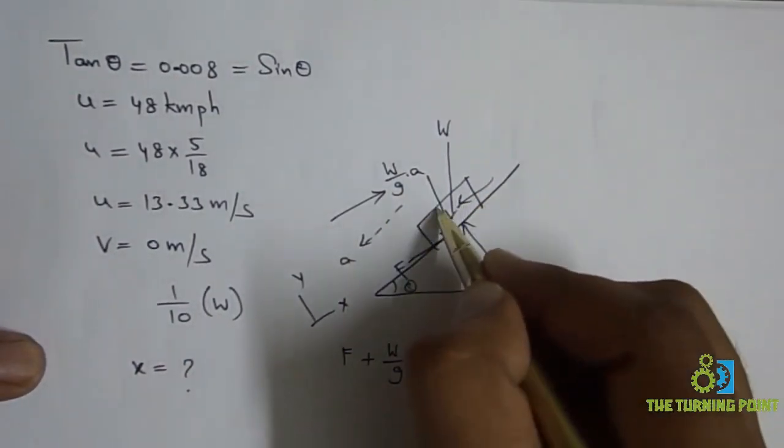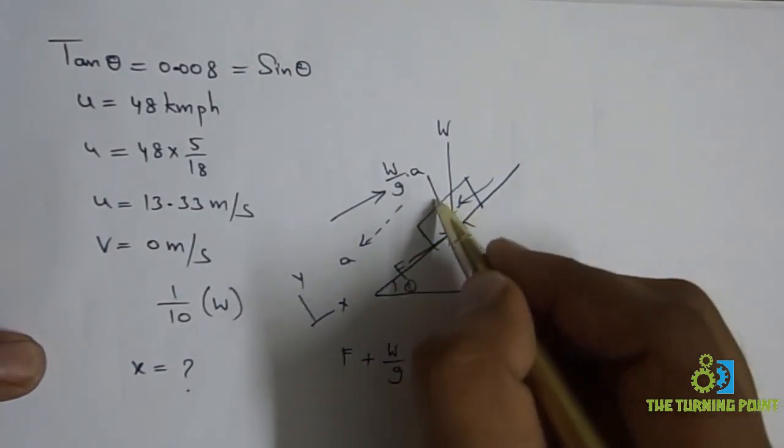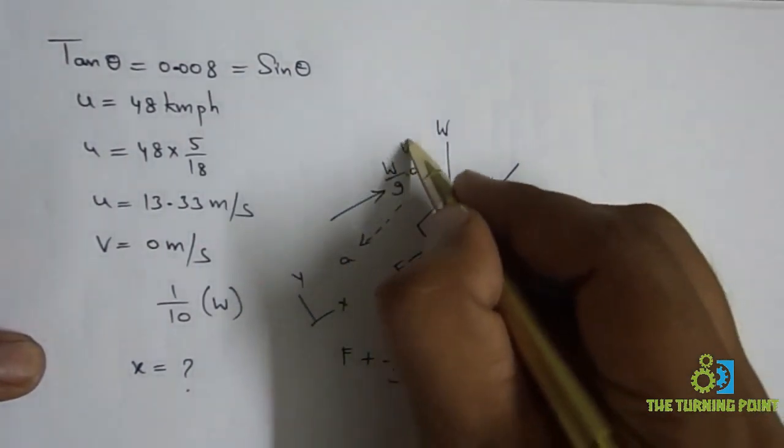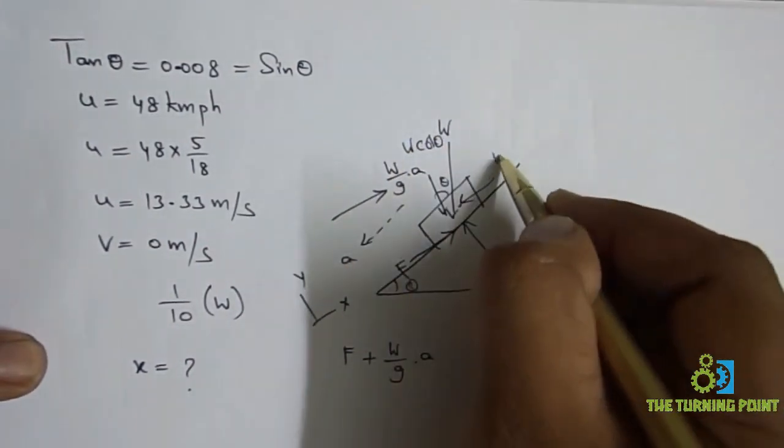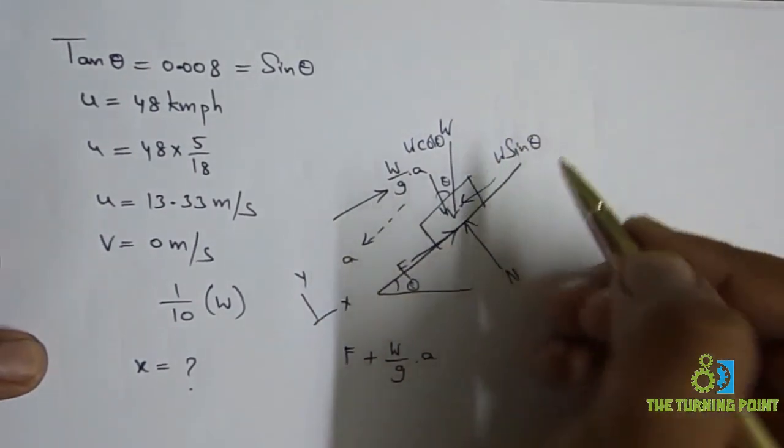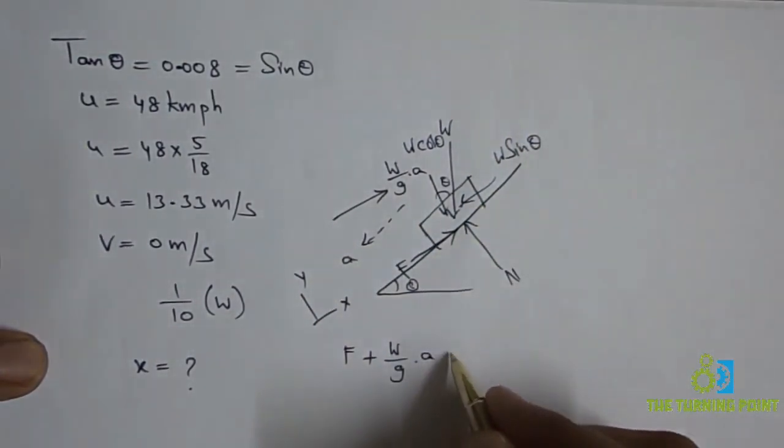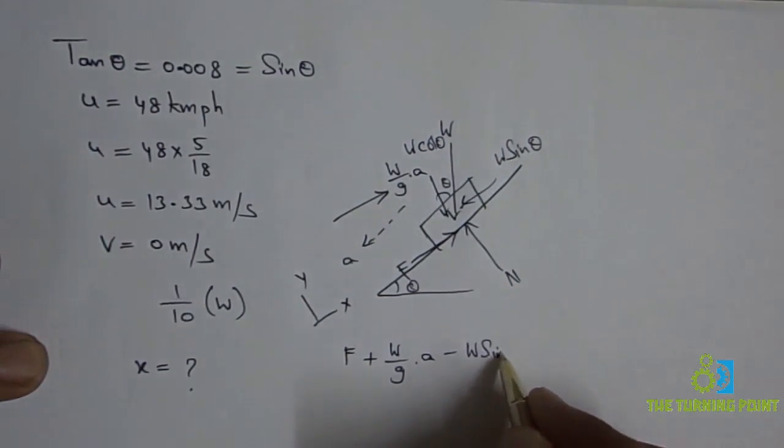Weight can be resolved into two components. If this is theta, this is going to be theta. Then it is W cos theta, it is W sin theta. Minus W sin theta equal to 0.